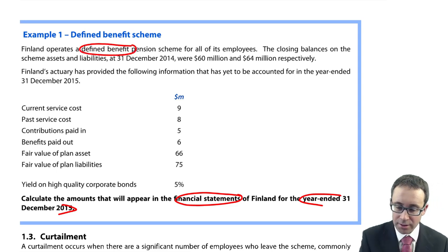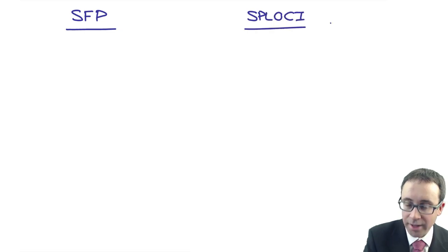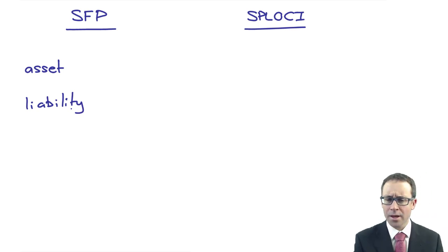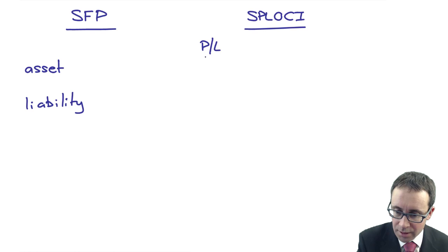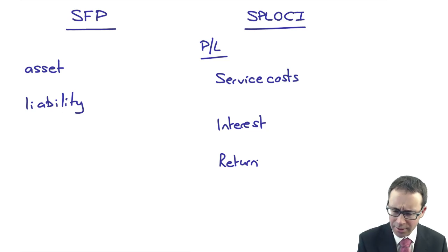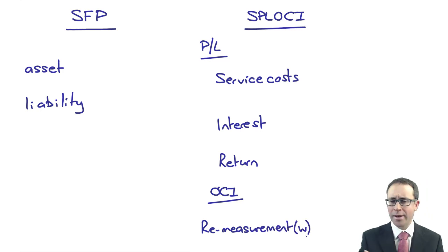It says here we operate a defined benefit pension scheme. So as soon as we see that, we're thinking: what goes on the statement of financial position? What goes on the statement of profit or loss and other comprehensive income? On the SFP, we're looking at the pension asset netted off against the pension liability. On the statement of profit or loss and OCI, we're thinking about service costs, the interest, and maybe the return on assets. And then within other comprehensive income, we're looking at the remeasurement components.